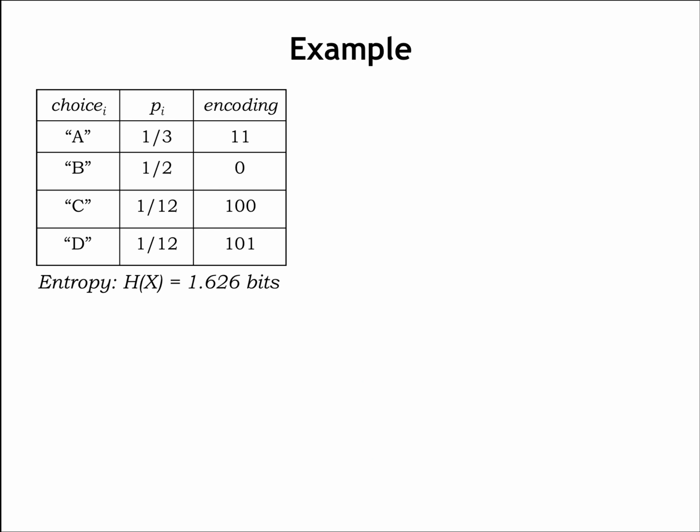Here's an example we've seen before. There are four possible choices to encode, A, B, C, and D, each with a specified probability. The table shows a suggested encoding where we follow the advice from the previous slide. High probability choices that convey little information are given shorter encodings, while low probability choices that convey more information are given longer encodings.